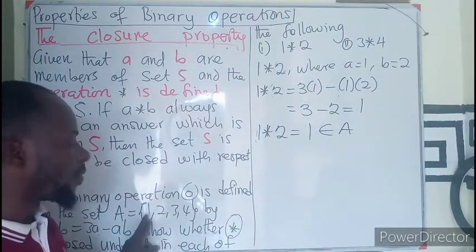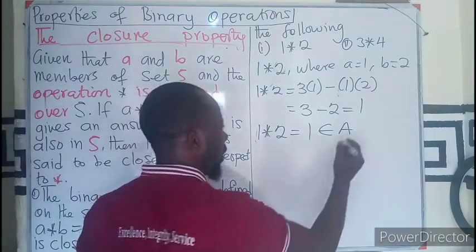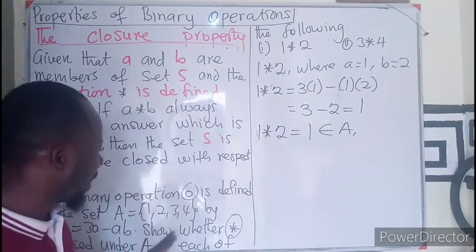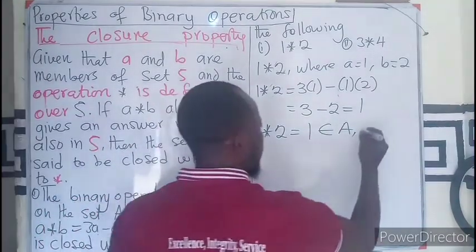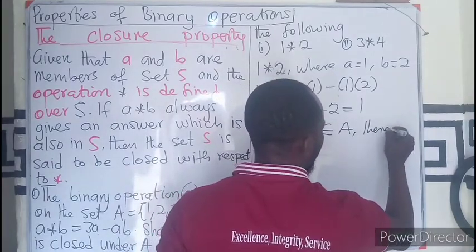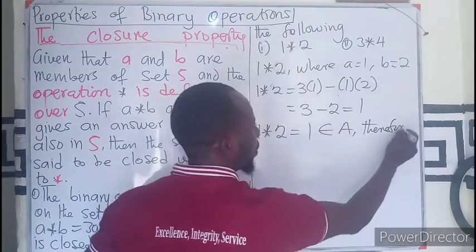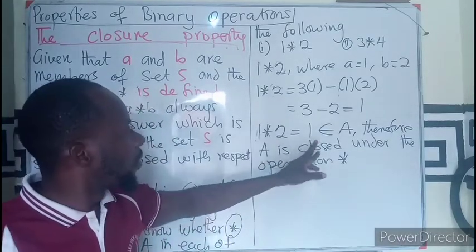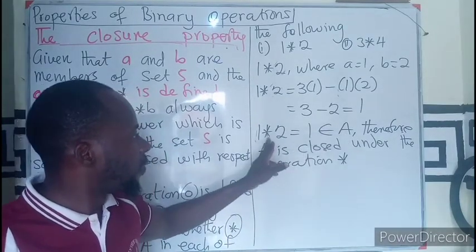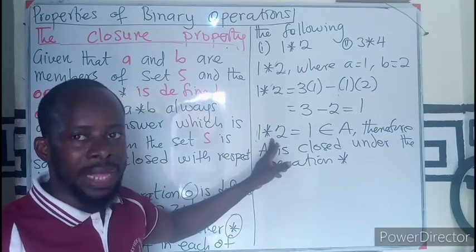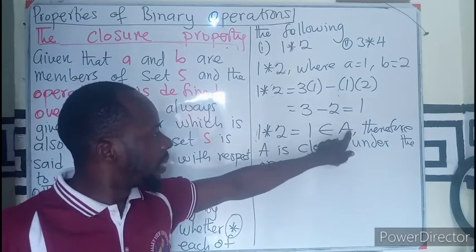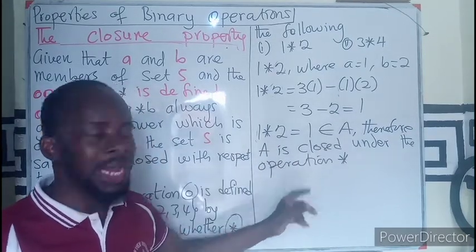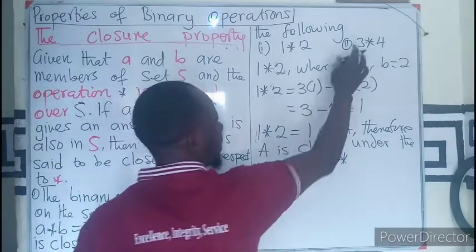If 1 is an element of set A, therefore we can say that the first two binary terms are making set A to be closed under this. Now if you are taking the second one,